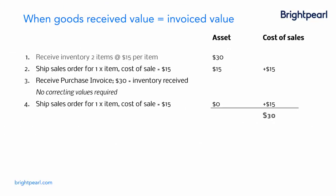Here's a simple example where there's no difference — where the goods received value equals the invoiced value. In step one, we receive two items at $15 per item, giving us $30 of asset. In step two, we ship one sales order for one item: the cost of sale is $15, so the asset reduces to $15 and cost of sales increases to $15. We then receive the purchase invoice at $30, which matches the received inventory value, so no correction is required.